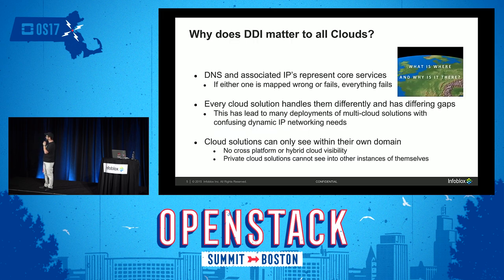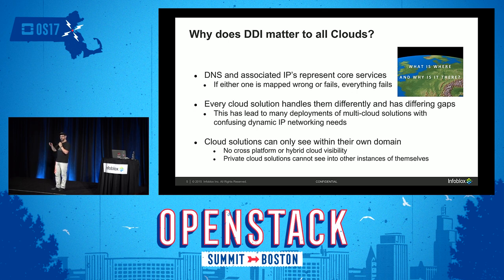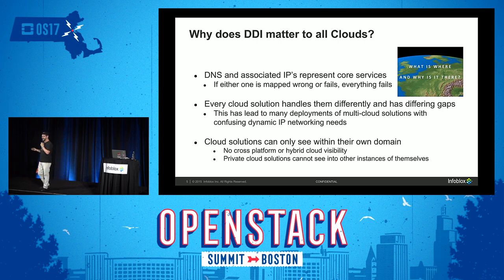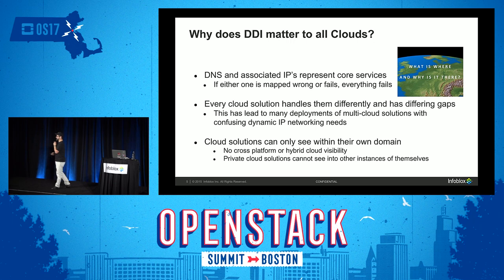But why does this matter? We've already discussed the idea of overlapping IP space. DNS and those associated IP addresses — your compute trying to find its controller, your storage trying to find its controller — all start with a DNS request. If that piece isn't working, that's really bad for cloud and really bad for uptime.